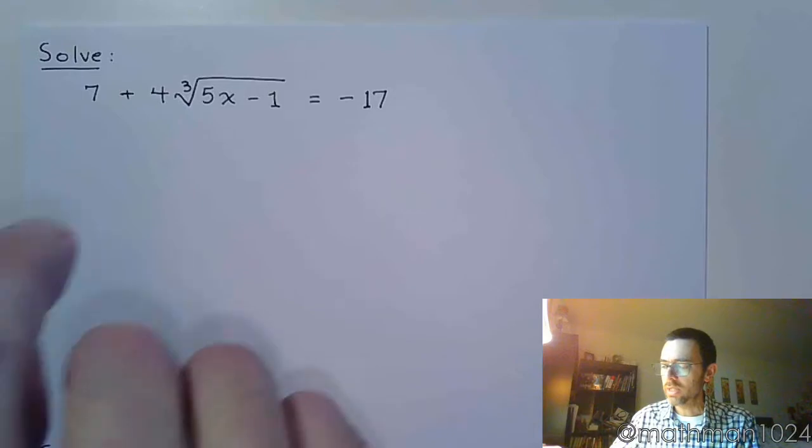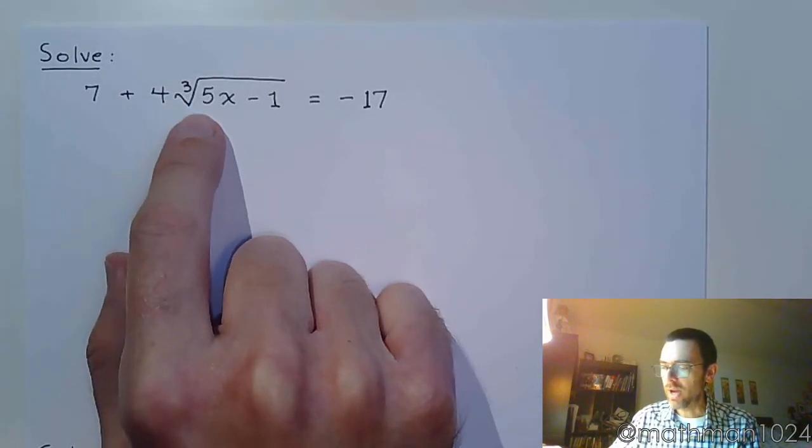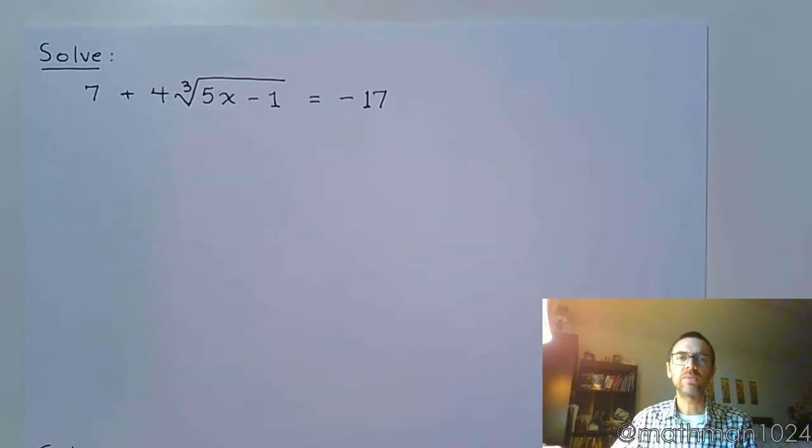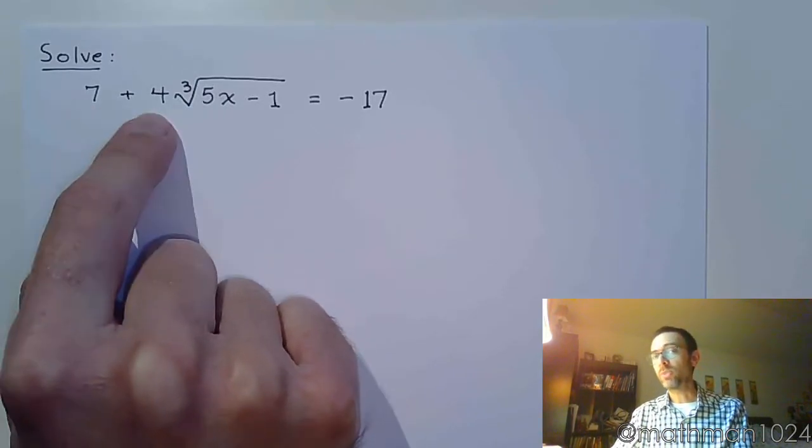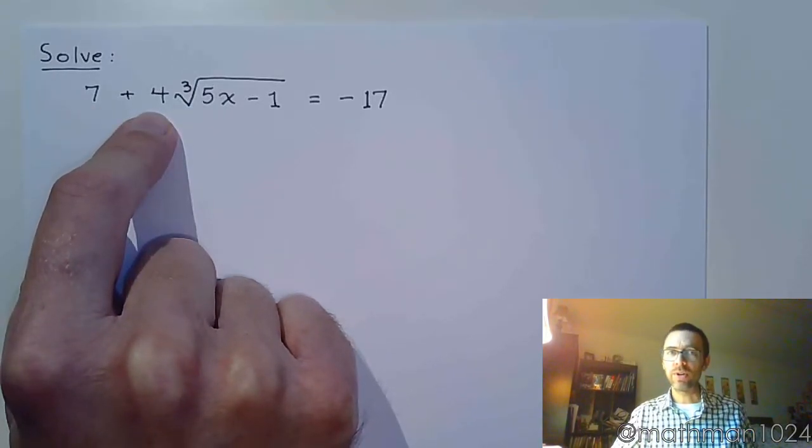7 plus 4 times the cube root of 5x minus 1 equals negative 17. So the order for solving a radical equation is to get the radical by itself first. Please remember this. The 7 and the 4 do not add. If you say 7 plus 4 right now, all bets are off. You're just wrong.